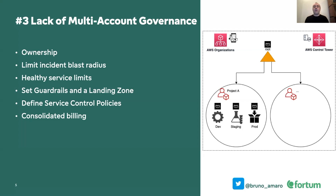The third thing that often lacks in projects is multi-account governance. It's quite common that when I jump into an ongoing project I didn't define from the start, they are using a single AWS account — and that's not a good practice for many reasons. It makes it easy at first for development teams to start deploying things, but if you have your development, staging, and production environments all mixed in the same account, it's a recipe for disaster, because you cannot limit the blast radius in case of an incident. If your resources get hacked, basically all your environments are hacked.